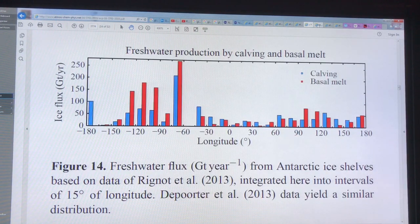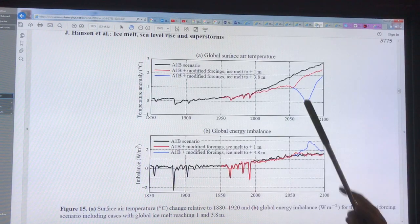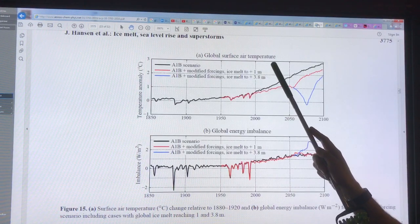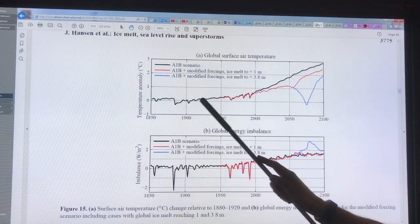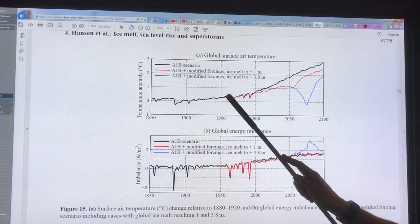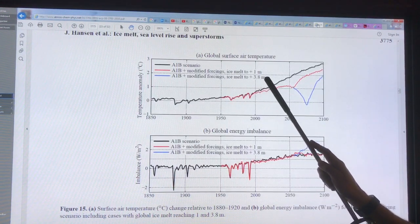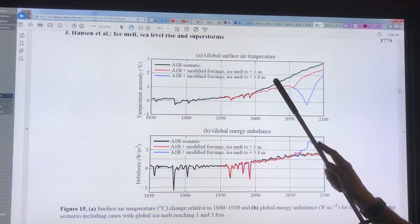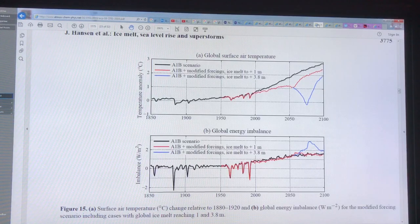Again, this is the global surface air temperature in the IPCC scenario but with ice melt. With 1 meter of sea level rise you would follow a lower curve, and if there's ice melt enough to give you 3.8 meters of sea level rise then you would see a drop like this.